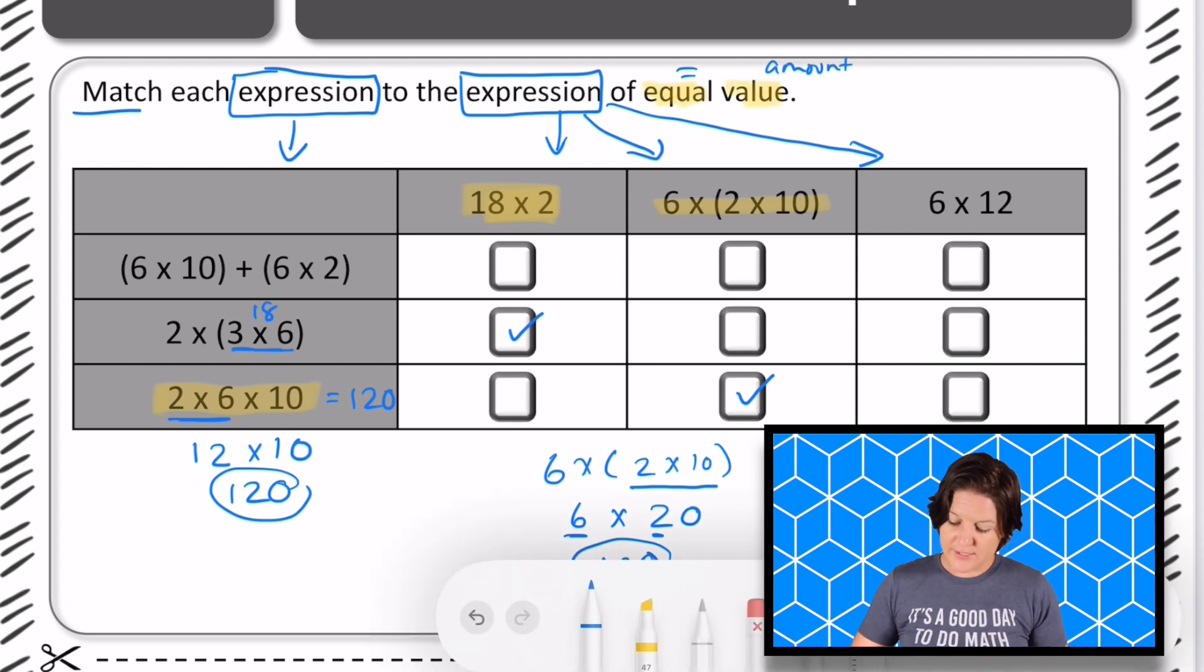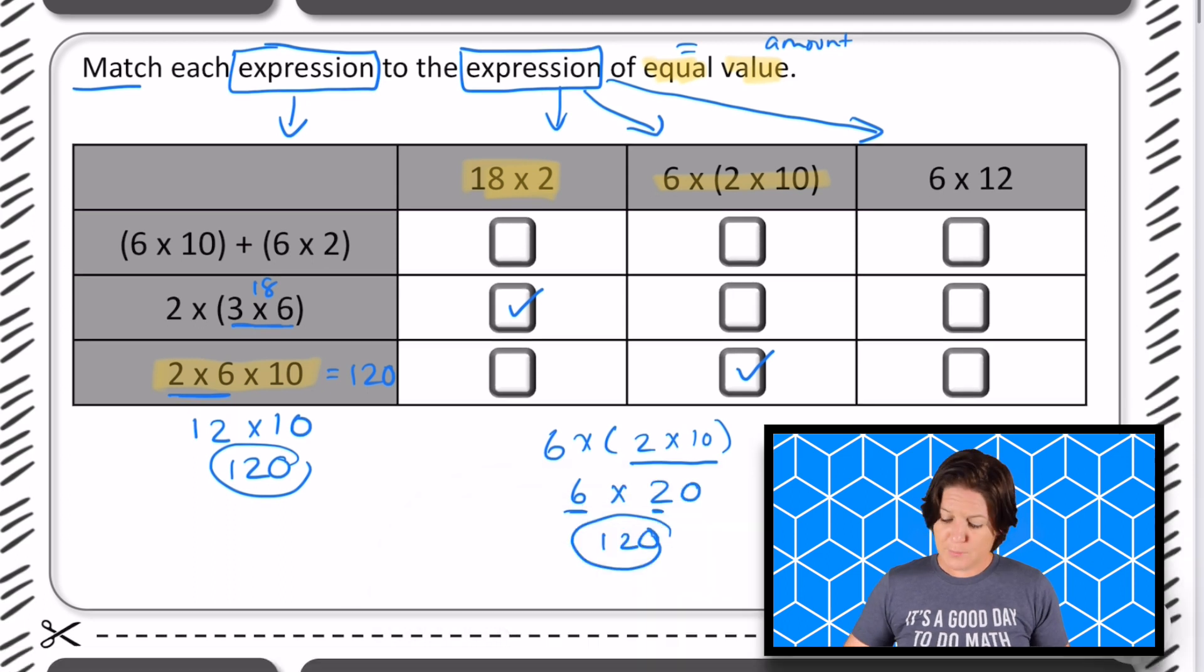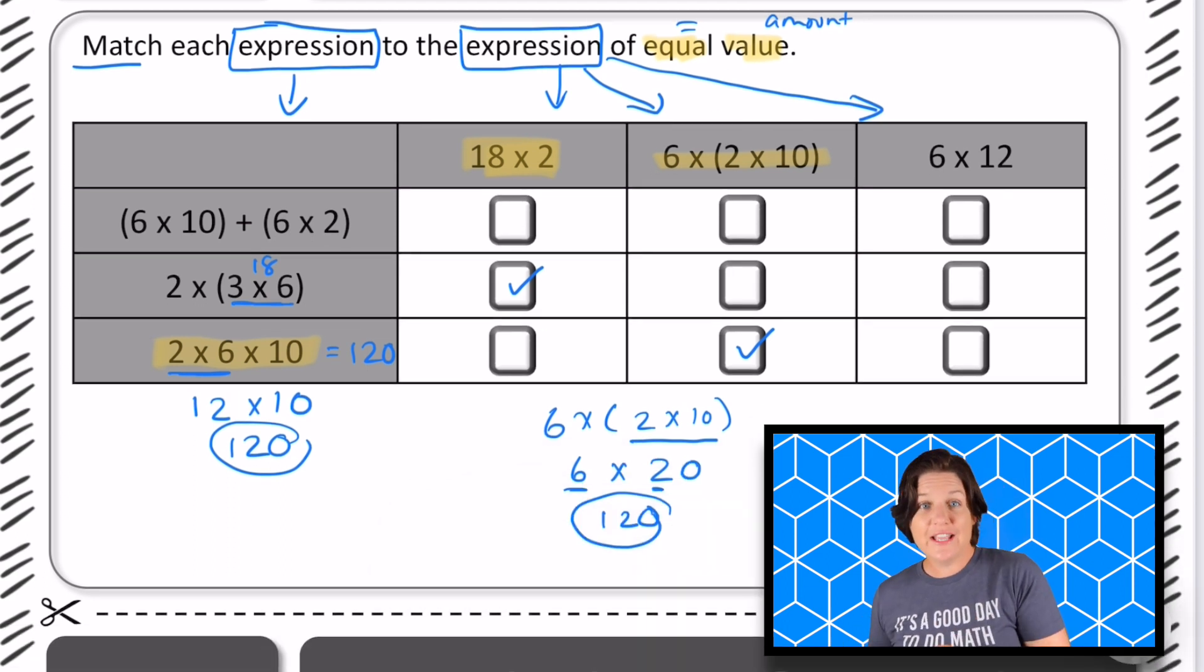Now, for the final one, we could say, all right, this one looks a little bit crazy. It must be the last one, 6 x 12. That must be what it matches. But we're going to make sure we're not just going to select that when we can do a little bit of work to make sure.